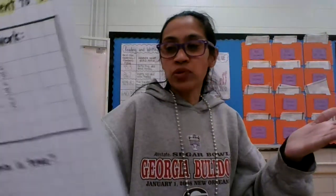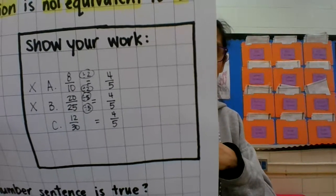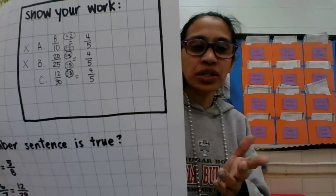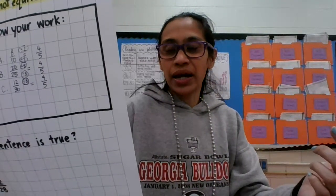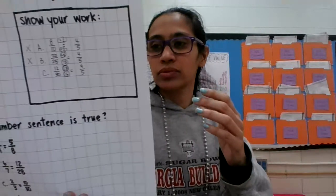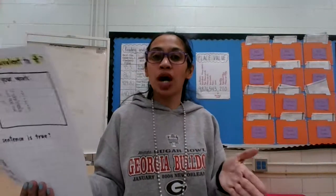Let's look at C: twelve-thirtieths — is it equivalent to four-fifths? To go from 12 to 4, I'm dividing by three. Make sure you practice your times tables — you need to know your facts. How about 30? 30 divided by what equals five? Divided by six. So 12 divided by three is four, 30 divided by six is five. Are they equivalent? No, they are not — because I'm dividing by three on top and by six on the bottom. It has to be the same factor. So twelve-thirtieths is NOT equivalent to four-fifths. That is our correct answer.